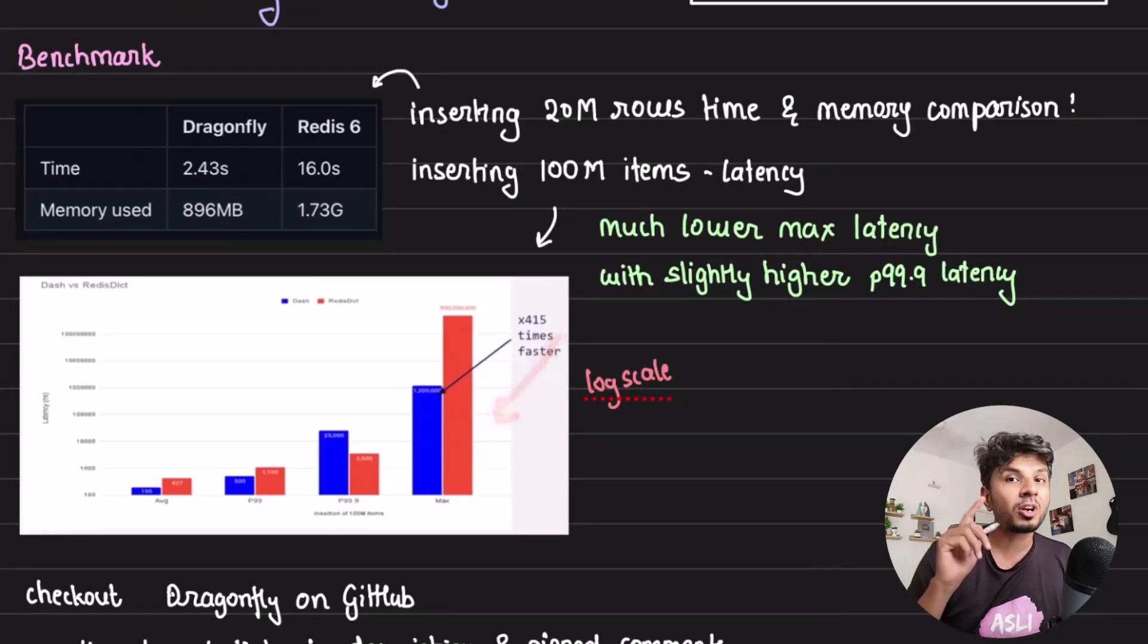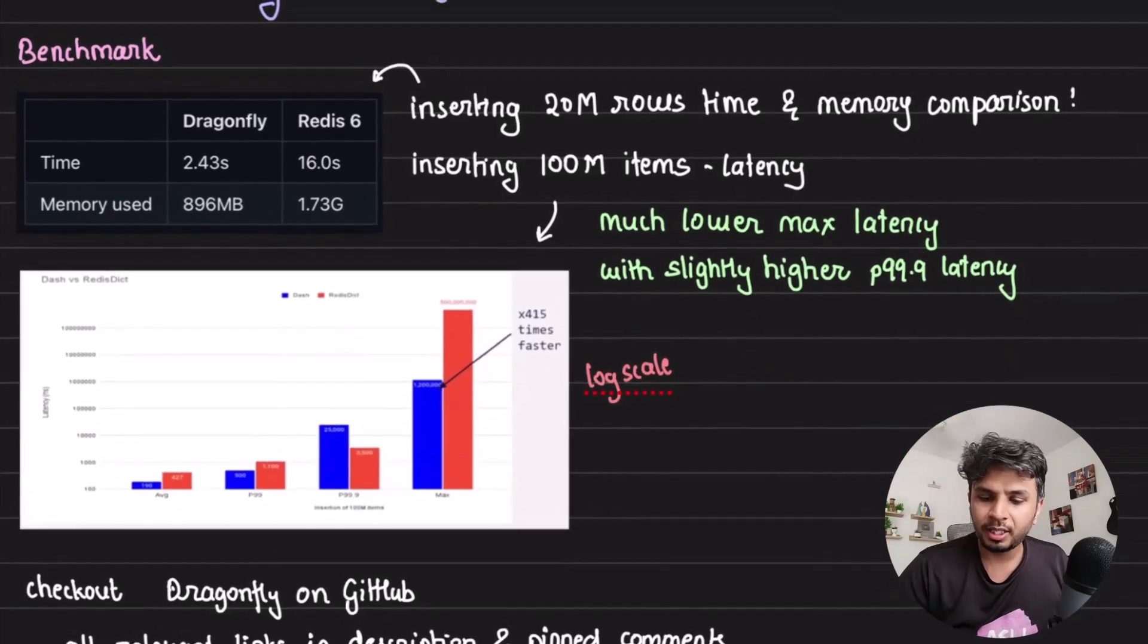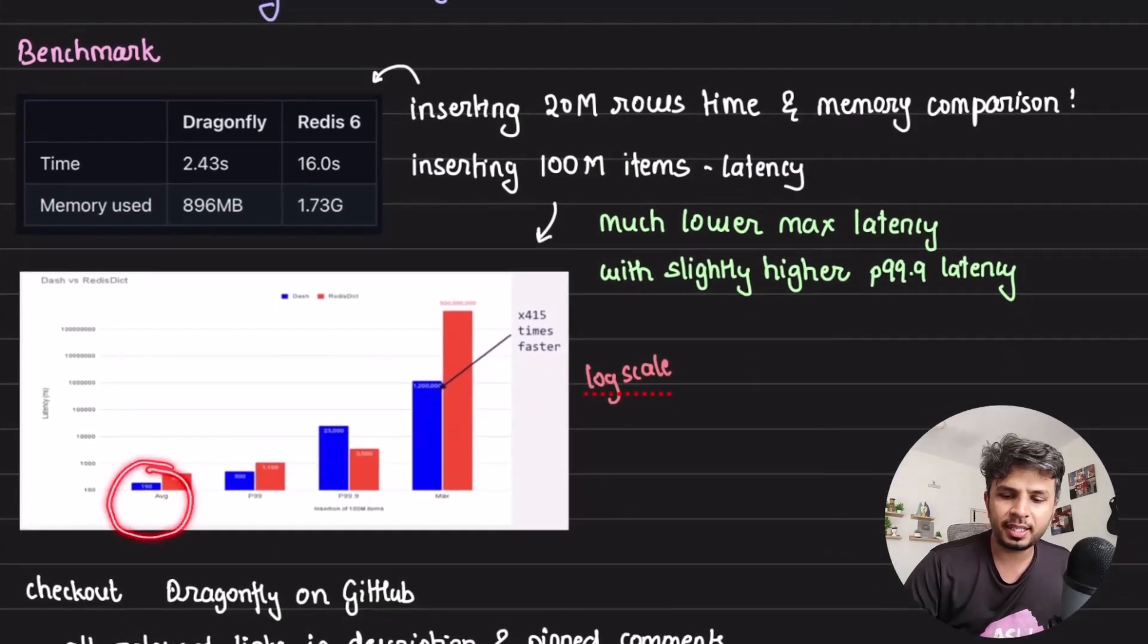All that looks linear but it is actually exponential because it's a log scale plot. If you observe the latency, the average latency, the P99, the P99.9 and max latency here, we clearly see how much faster is dash table as compared to Redis dictionary.